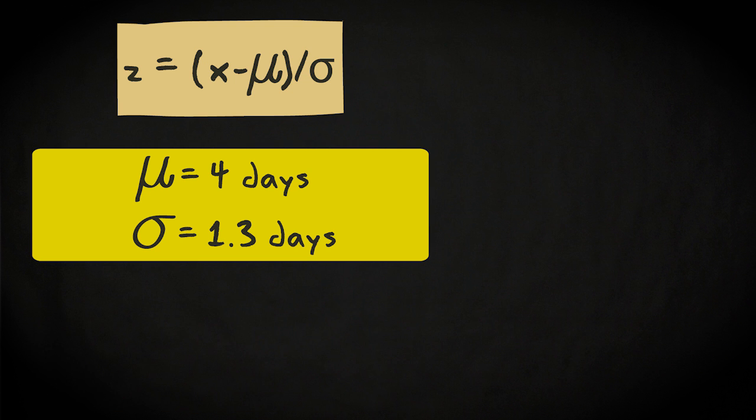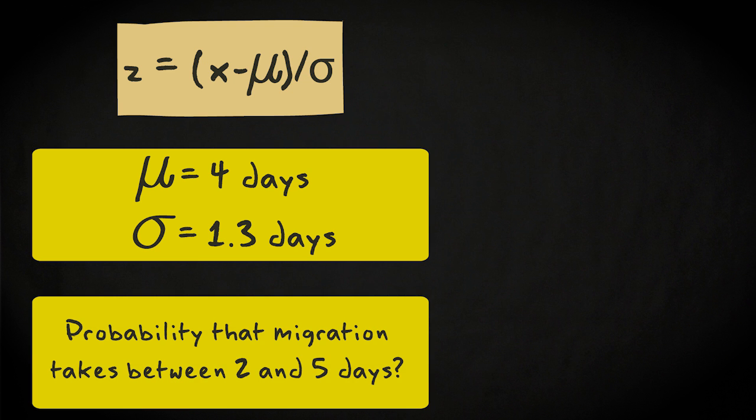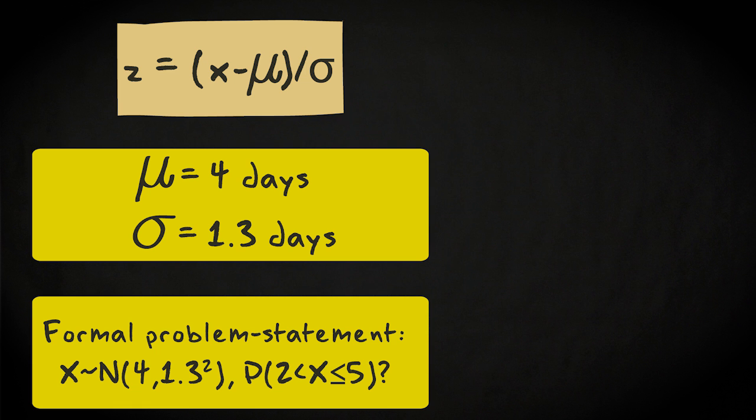Let's make another calculation. Now, you'd like to know the probability that the migration duration would lay between 2 and 5 days. Could you calculate that probability as well? The formal problem statement is given here.